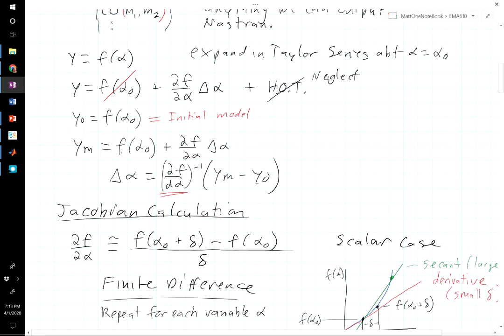So this term right here is y0. That's the nominal state values. If we set y equal to the measured natural frequencies, for example, then we can move this term to the other side. We get y minus y0. And then we can invert the Jacobian, which is a matrix in the most general case, and solve for the changes in the parameters that we might need. That's a common approach.